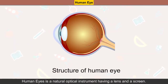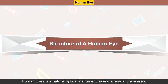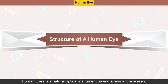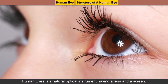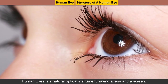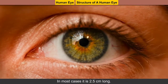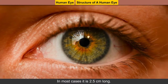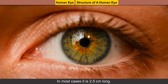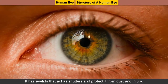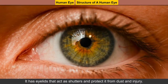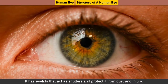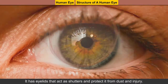Human eye: the human eye is a natural optical instrument having a lens and a screen. The human eye is almost spherical with a slight bulge in the front, and is in most cases 2.5 cm long. It has eyelids that act as shutters and protect it from dust and injury.